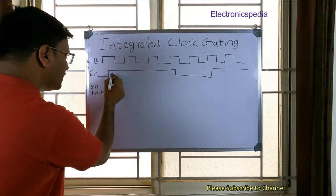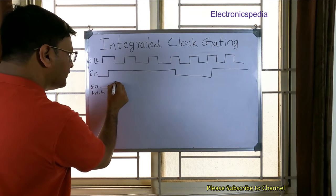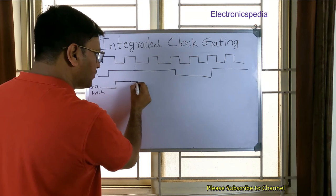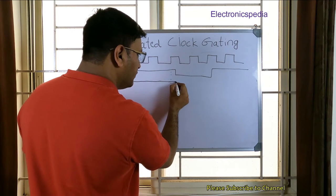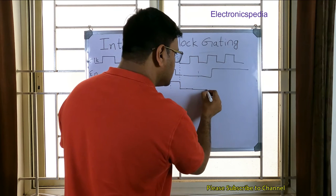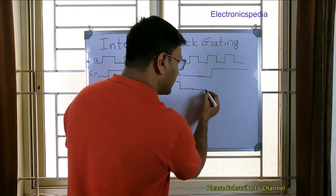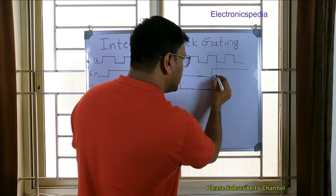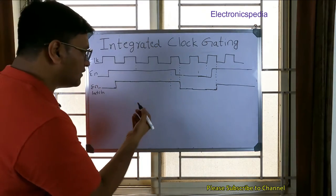Assuming the enable value is zero initially, we sample the enable signal at the active-low level of the clock. Here it comes out to be one, and it will remain high until the next active-low level. At subsequent active-low periods it continues to be one. Then at this point the enable goes low, so enable_latch comes down low and continues from there.